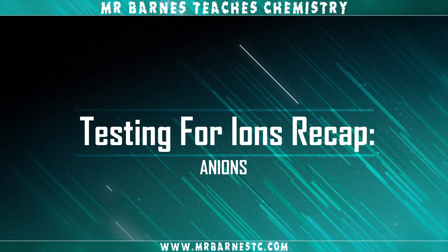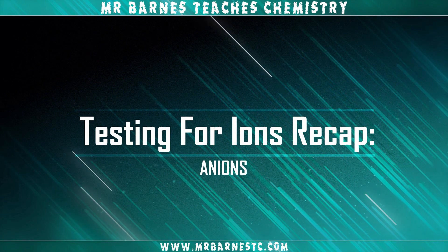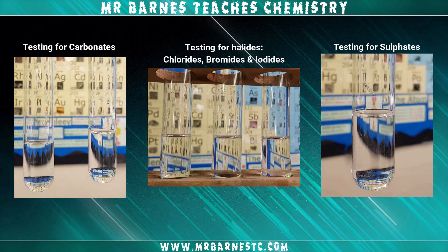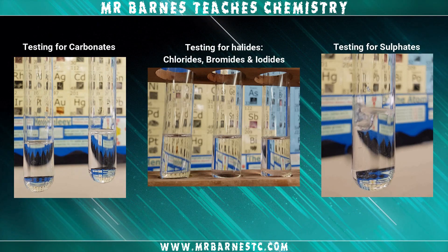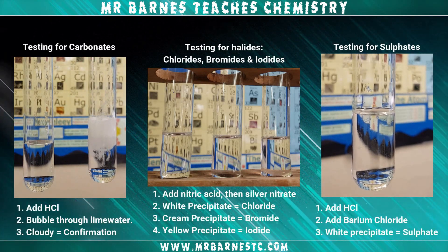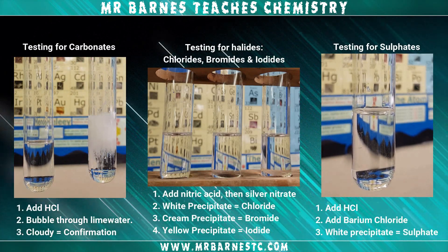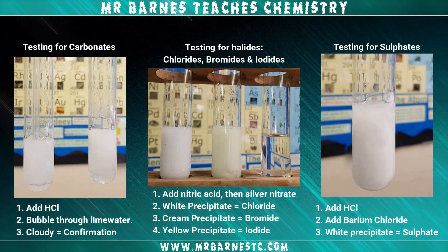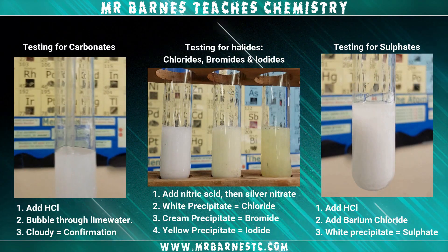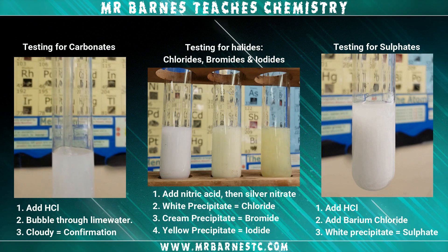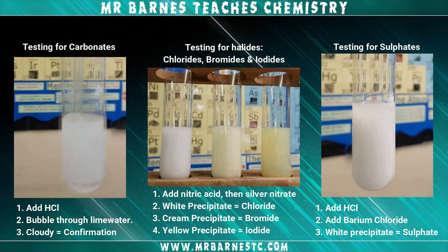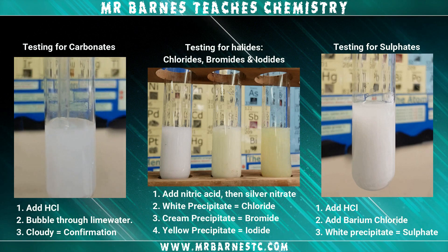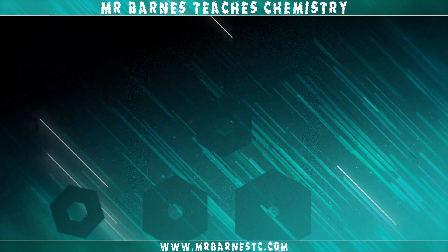And then finally your anion recap. Carbonates: put an acid in, it'll give off a gas, bubble that gas through lime water and it'll go cloudy. Your halides: add nitric acid then silver nitrate. White precipitate means you've got a chloride, cream precipitate bromide, and yellow precipitate iodide. And finally a sulphate: add hydrochloric acid then barium chloride and you'll get a white precipitate if a sulphate is present.